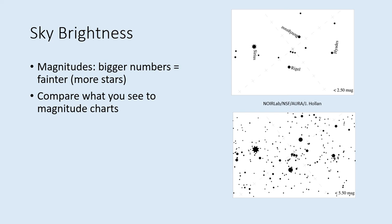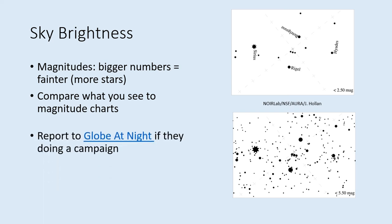Record the constellation you're observing and list which magnitude chart best matches what you are seeing in your night sky. Also, have a look at the Globe at Night website linked here and see if they are running one of their observing campaigns. Globe at Night relies on citizen scientists to submit observations, so your data can help them measure light pollution worldwide.